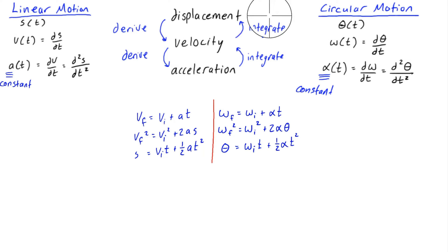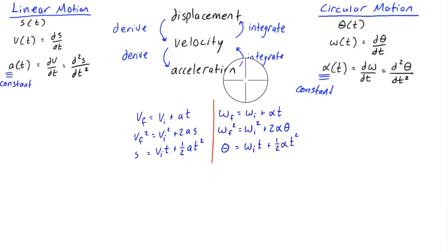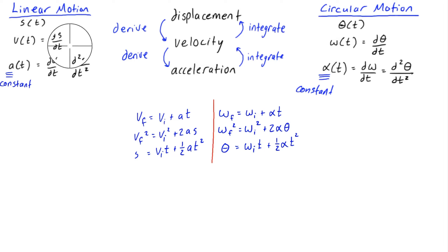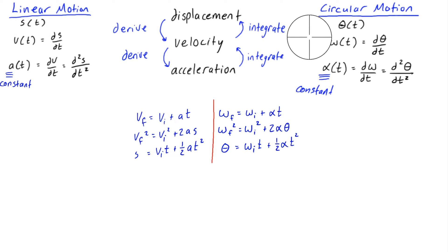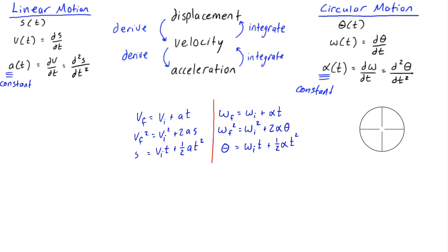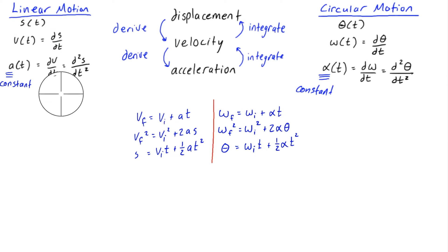In linear motion — actually in both — when you have displacement, if you derive it, you get velocity. If you derive it again, you get acceleration. You can go backwards by integrating from acceleration to velocity and integrate again to get displacement. In linear motion, displacement, velocity, and acceleration are basically the first and second derivatives as we go down. And with circular motion, we have theta, omega, and alpha — again, first and second derivatives as we go down, deriving displacement, velocity, and acceleration in circular motion as functions of time, and in linear motion also as functions of time.